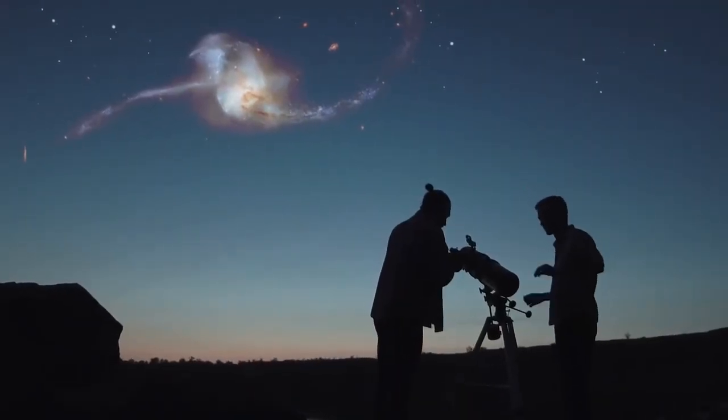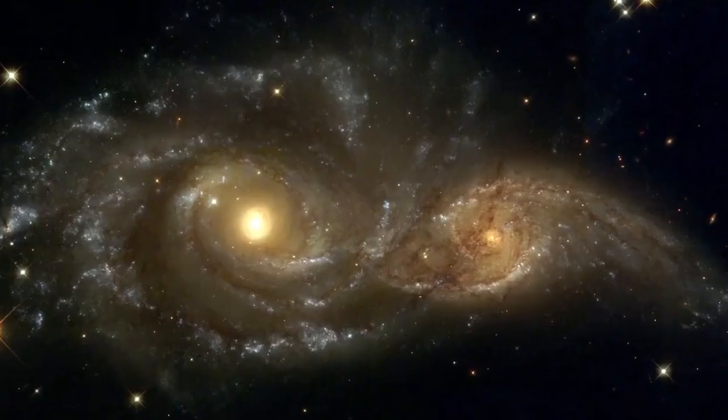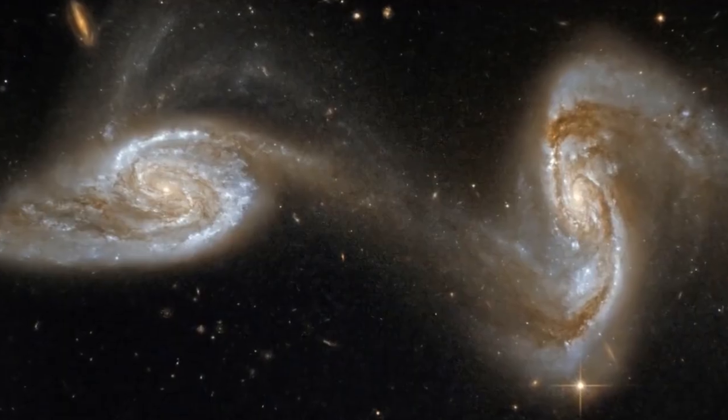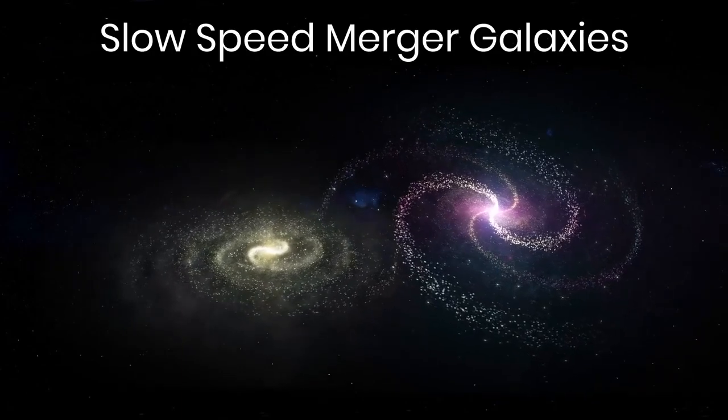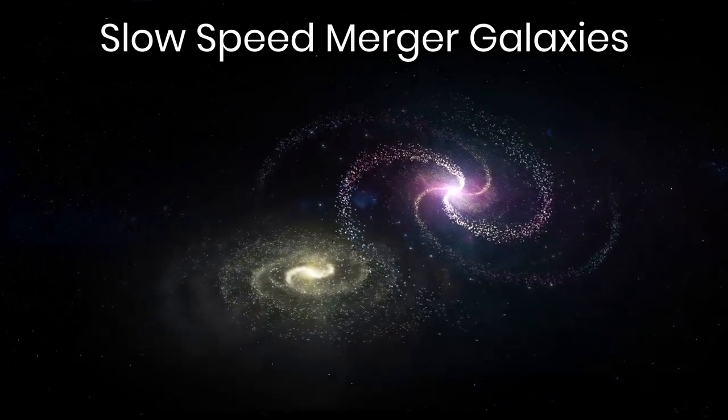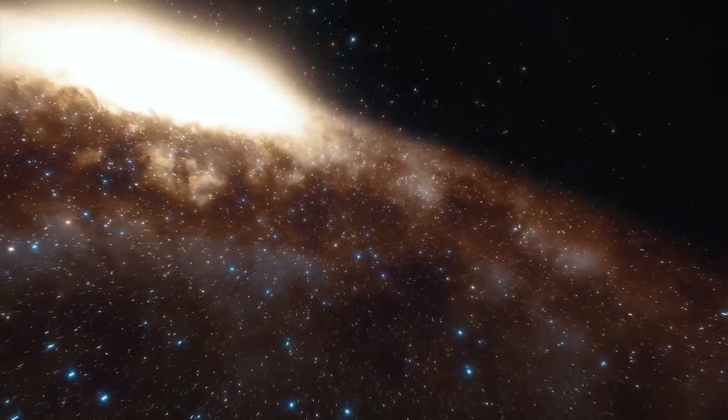In a collision of galaxies, there are two scenarios for the development of events. The first is the most common. It happens when galaxies are moving towards each other at a very slow speed. The process of their collision takes millions of years.